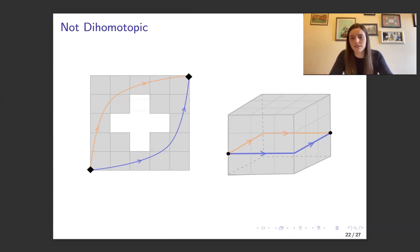And so in the undirected setting, the blue and orange path are homotopic. However, they are not dihomotopic because if we try to go from the blue path to the orange by going up and over or down and up, we're going to run into paths that are not directed.